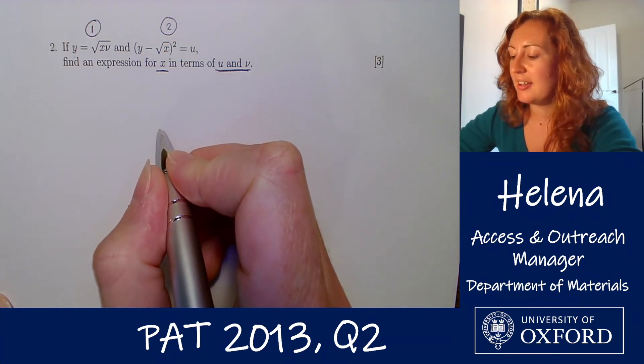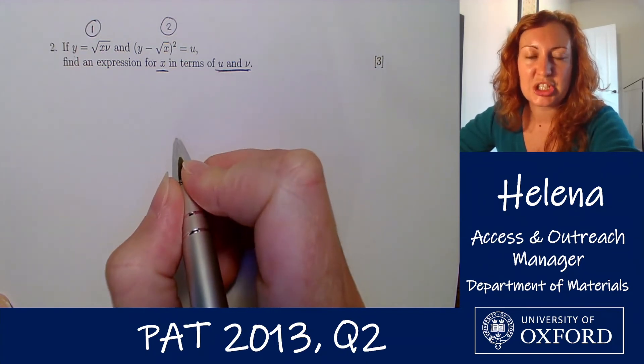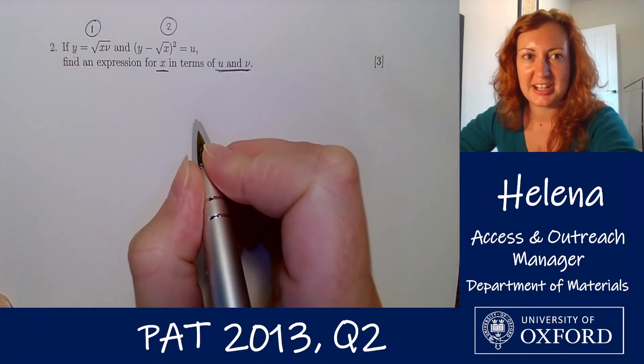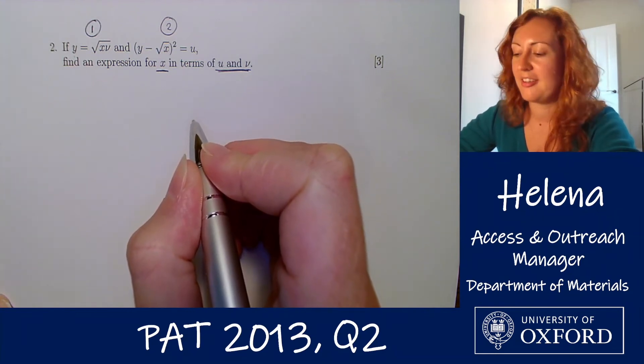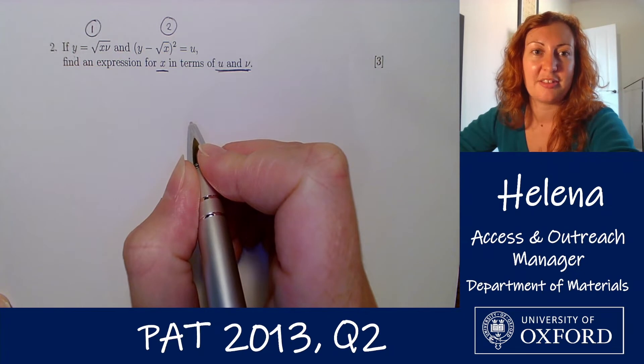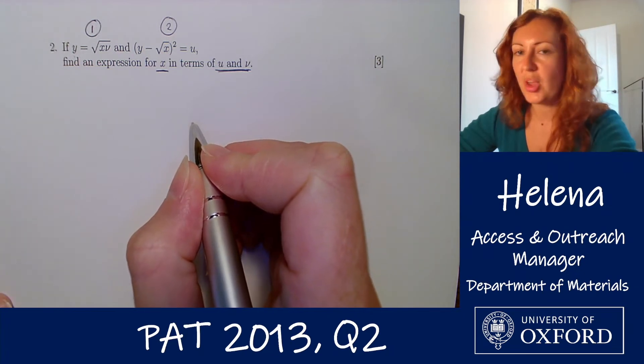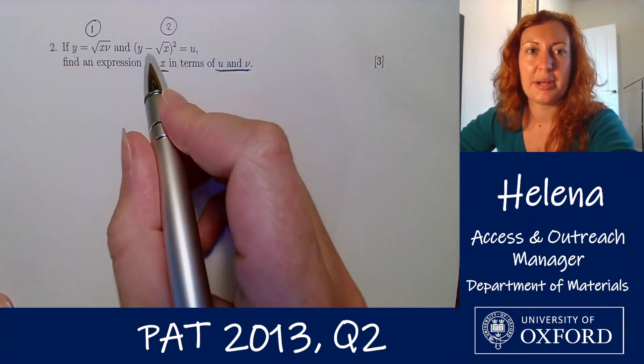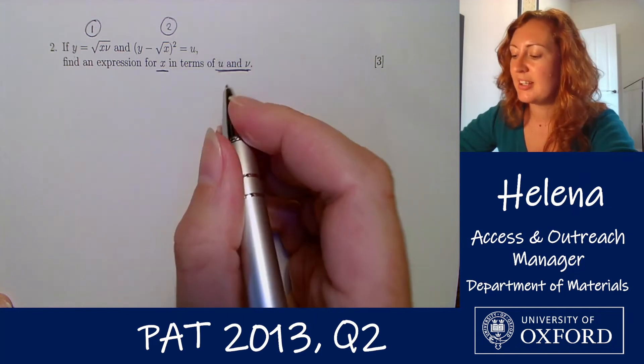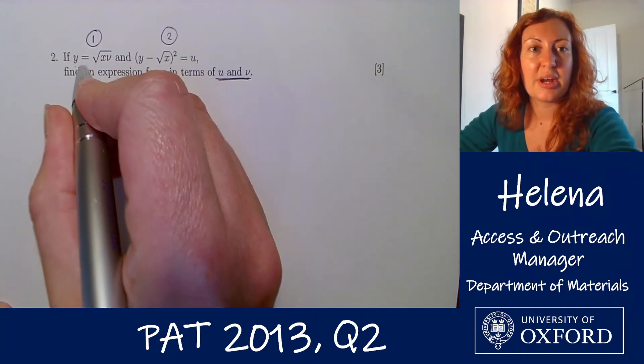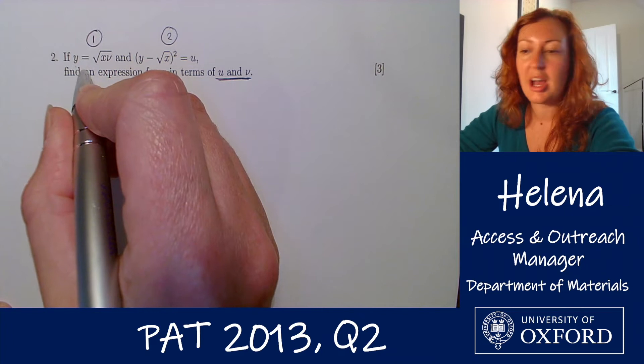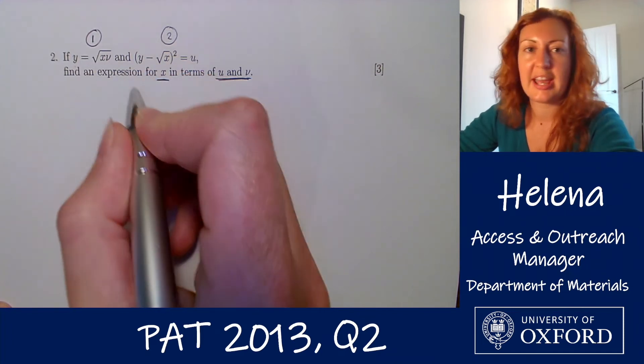Okay, so we're going to have to do a little bit of substitution and a little bit of algebraic manipulation to get the final equation that we're looking for here for x equals. All right, so we want to eliminate y in these equations, and very nicely equation number one is an expression for y. We are given y equals root x times v.